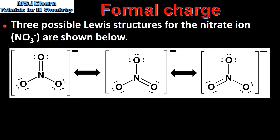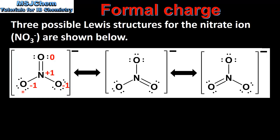In our last example we look at the nitrate ion. Three possible Lewis structures for the nitrate ion are shown below. Starting with the nitrogen atom we have five valence electrons, minus half of eight which is four, giving a formal charge of plus one. For the oxygen atom with a double bond we have six valence electrons, minus four non-bonding electrons, minus half of four which is two, giving a formal charge of zero. And for the two oxygens with single bonds we have six minus six minus half of two which is one, giving a formal charge of negative one on both oxygens.